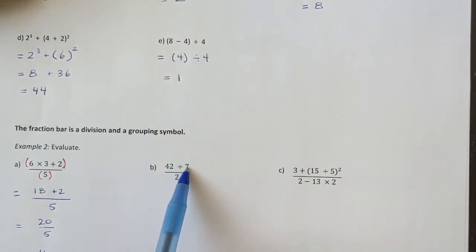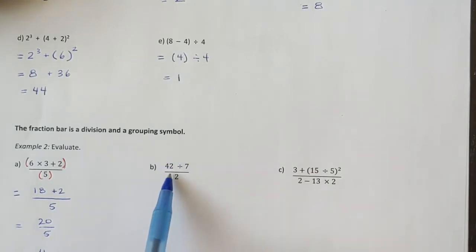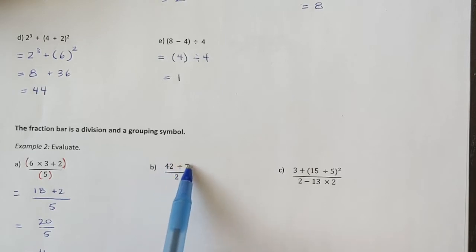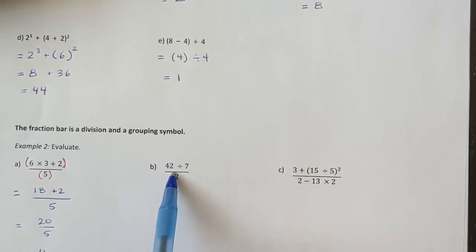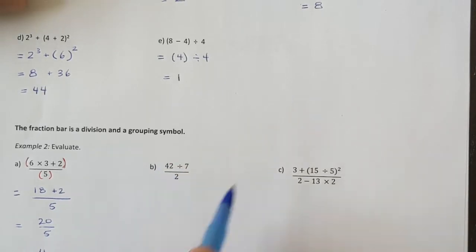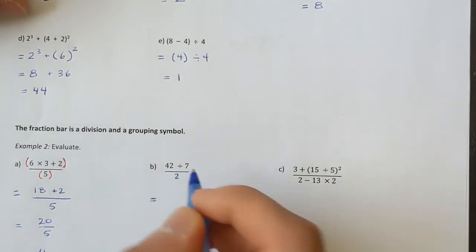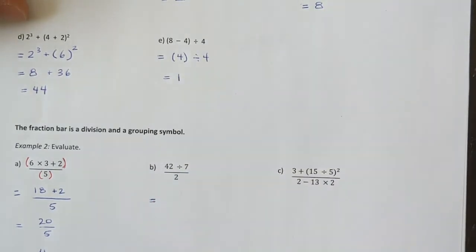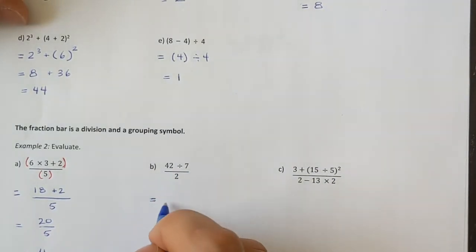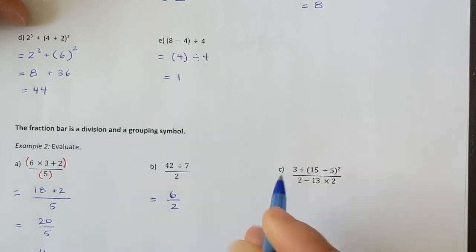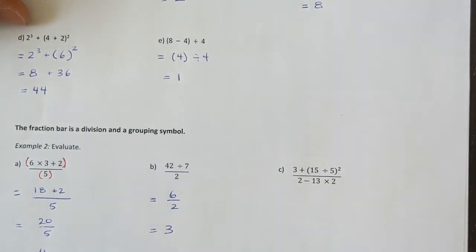Next: 42 divided by 7, then divided by 2. Again, because there is a fraction bar I must do the numerator first then divide by the denominator. 42 divided by 7 is 6, divided by 2, and 6 divided by 2 is 3.